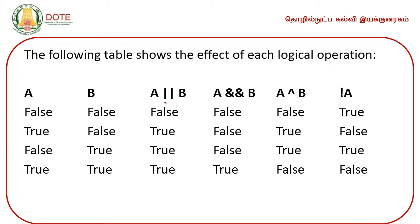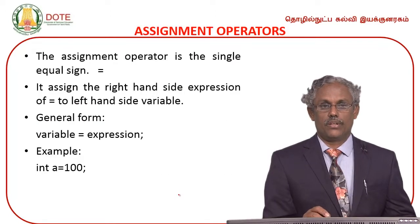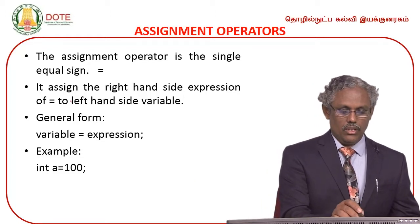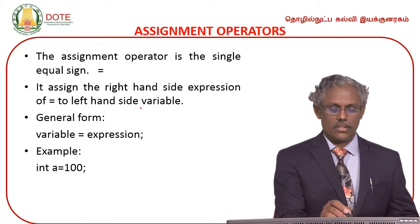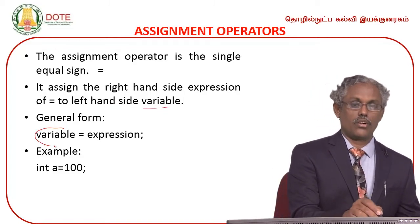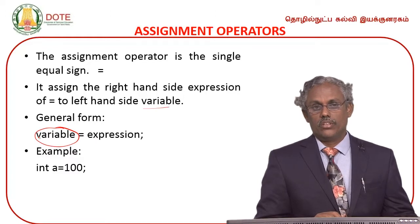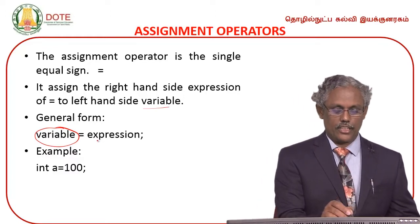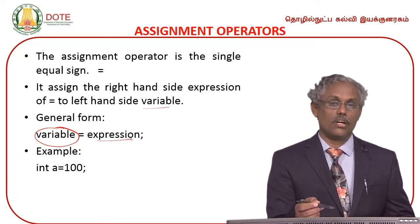For OR operation: if either one relational expression value is true, output is true. The NOT operator is used only with a single condition. XOR is a bitwise operation. Assignment operation uses single equal to assign the right-hand side expression to a left-hand side variable. The left-hand side must always be a variable, not a constant.